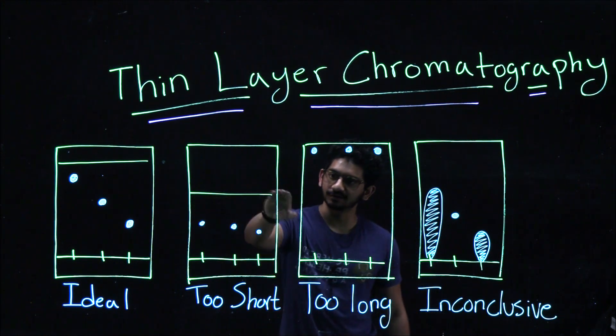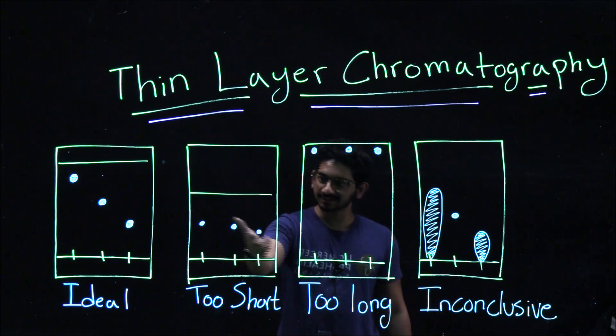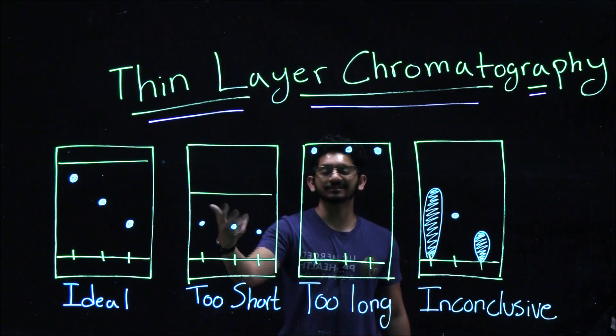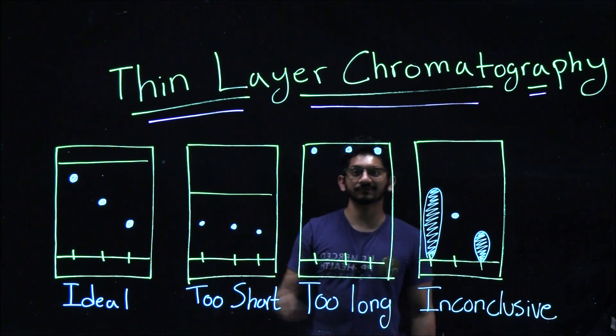Here, if you cut off the solvent too short, making the solvent front down here, you would see a slight downward slope. However, it's still inconclusive. You won't be able to tell if these spots are different or the same.